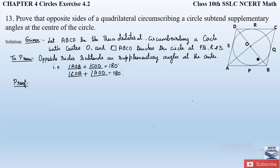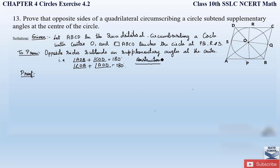Now for the proof: there are four external points A, B, C, and D with respect to the circle. We can apply theorem 4.2 to these external points — tangents drawn from an external point are equal in length. If we join OP it forms a radius, and the radius is always perpendicular to the tangent at the point of contact. Construction: join OP, OQ, OR, and OS.